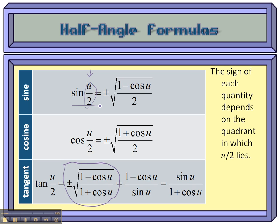Let's say we're dealing with the sine. And let's say that u over 2 was in quadrant 1. If it was in quadrant 1, then the sine is positive. If u over 2 is in quadrant 3, then we're going to use the negative one because sine is negative for that angle.